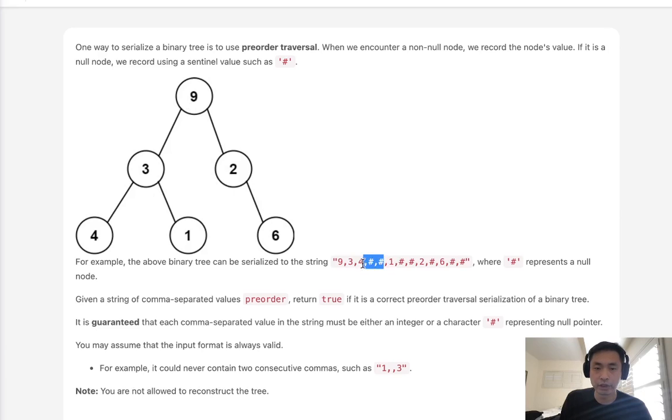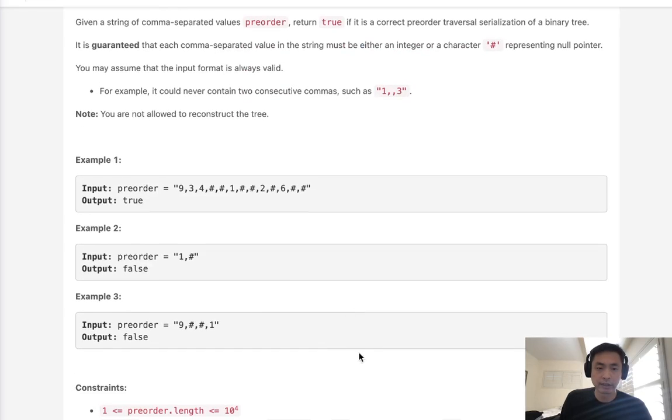So that's the thing. Like if we have two hash symbols, there should be a number that's paired with that. If we ever have a situation where we have multiple hashes without a number, that means it's invalid. All right. So let's begin.